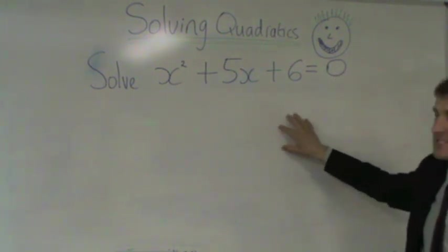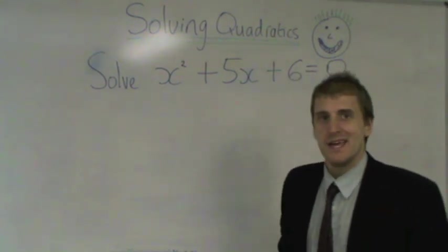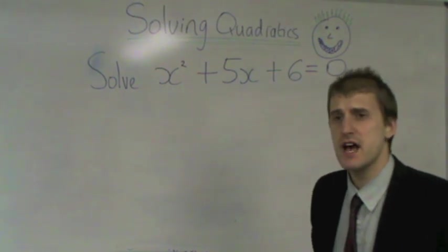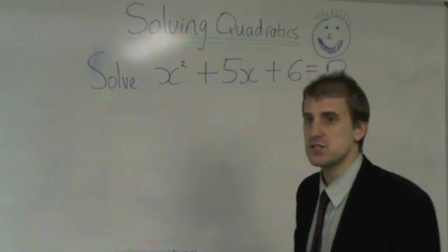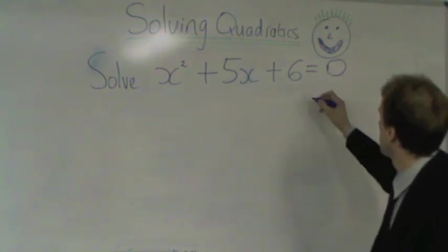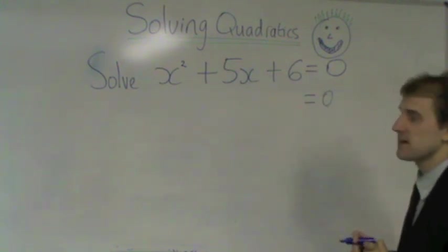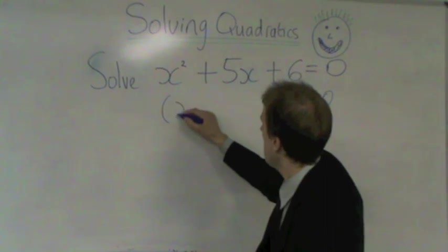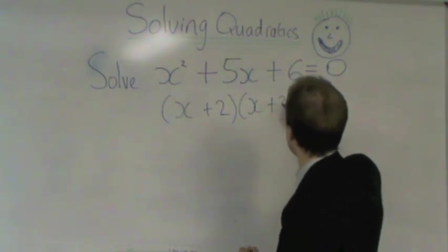So to solve quadratics, you might remember the line from the song. It goes like this: to solve quadratics, you just factorize. That's the key to solving quadratics, is just factorizing. So we've got a zero on the right, and we're going to factorize this left-hand side. x squared plus 5x plus 6 factorizes to x plus 2, x plus 3.